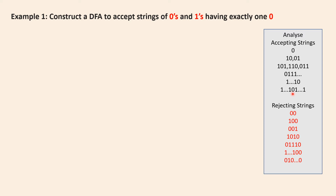Only then the DFA has to accept the string. The rejecting strings are those with two zeros or more. If I have zero-zero, or one-zero-zero, those should be rejected because there are two zeros. The zeros can be together or apart — if a second zero is encountered anywhere in the string, the DFA has to reject the string.